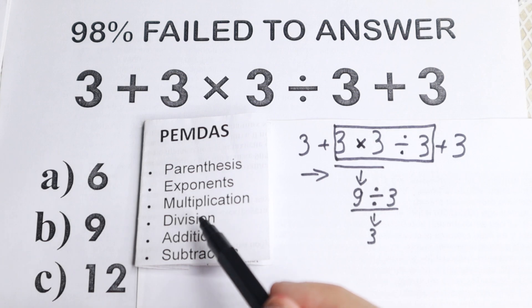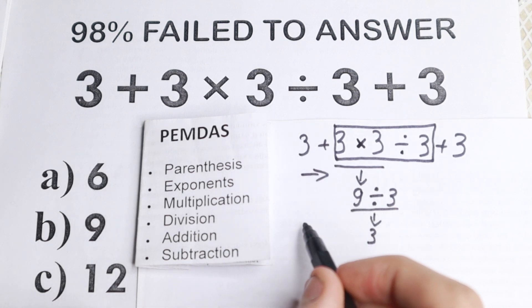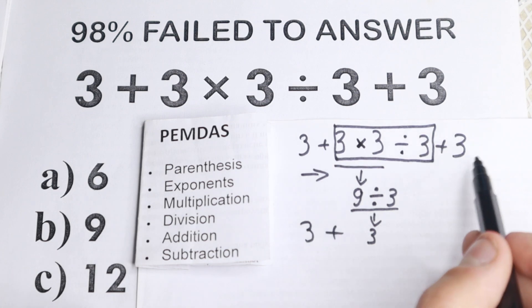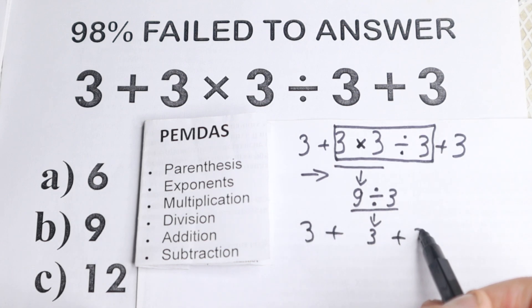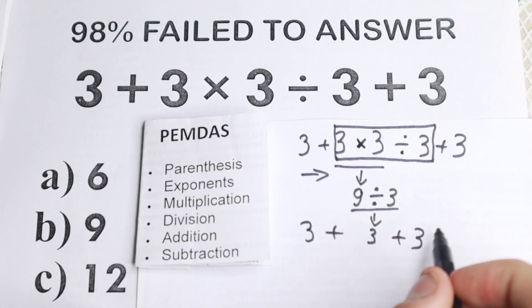And then we do this part, and then we have addition and subtraction. So I rewrite these values for the beginnings of 3 +, and then in the end we have + 3. So this is the last step, addition and subtraction. We don't have any subtraction, so we need to add these three values, three numbers, which is equal to 9. And this is our answer, option B.